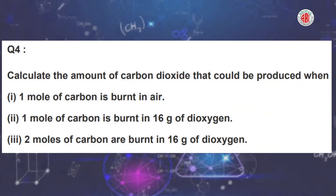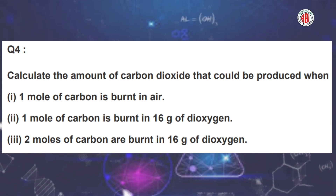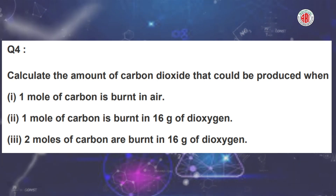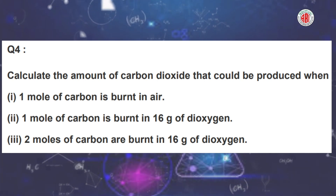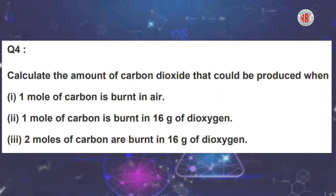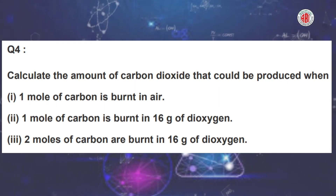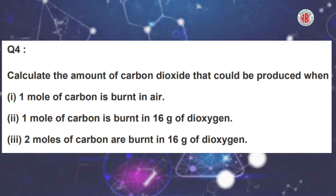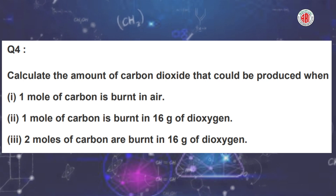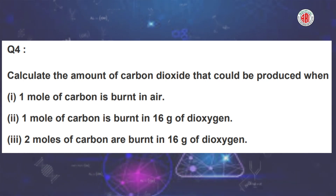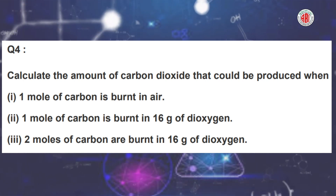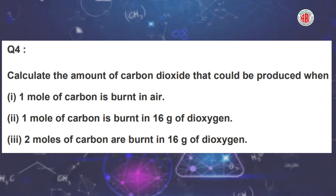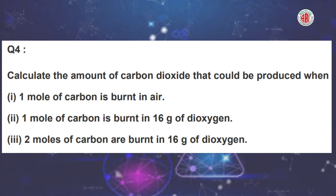The next question: calculate the mass of sodium acetate (CH₃COONa) — the COO group is the acetate group — required to make 500 mL of a 0.375 molar aqueous solution. The molar mass of sodium acetate is given as 82.0245 grams per mole. Let us find the mass of sodium acetate.